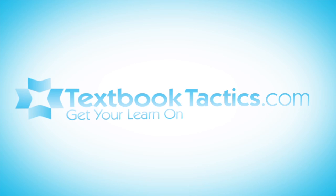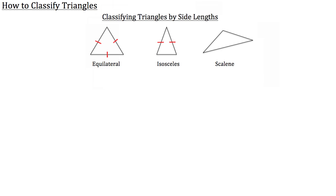Now for a tutorial on how to classify triangles. There are two ways to classify triangles. The first way is to classify them by their side lengths, and there are three different ways to classify triangles by their side lengths.